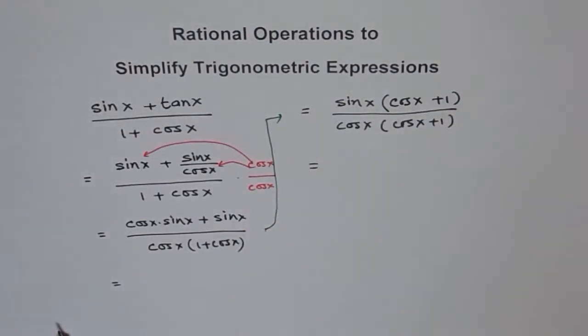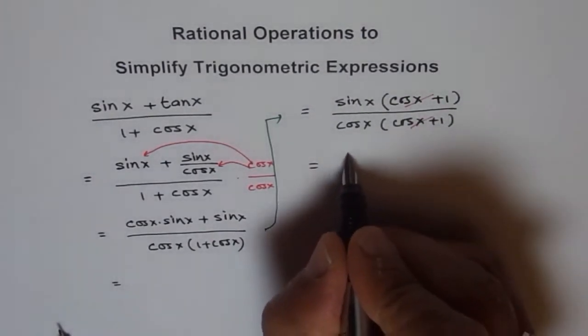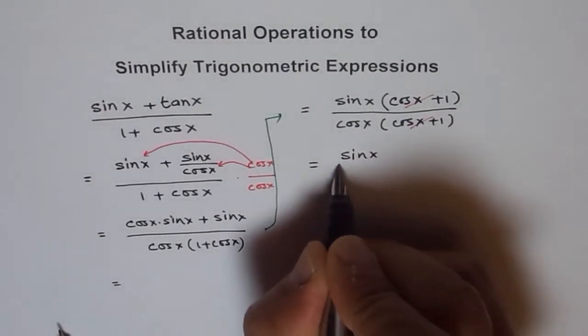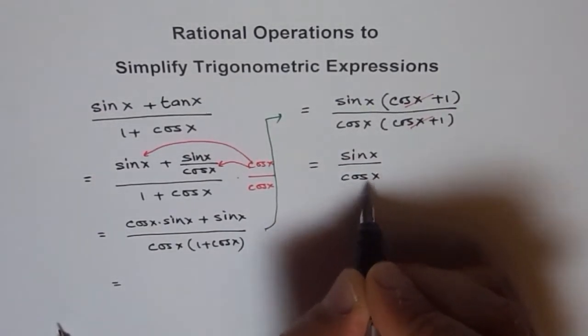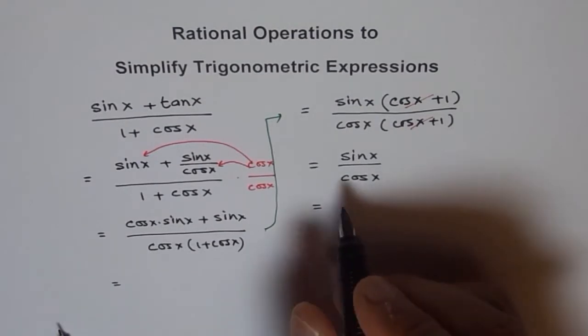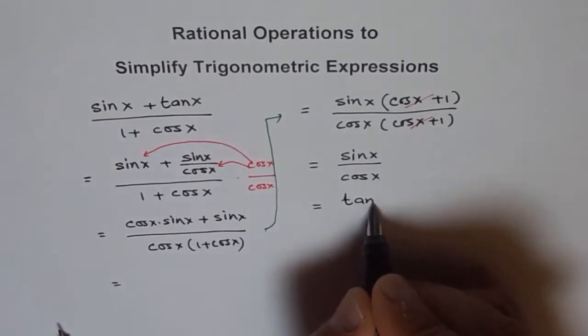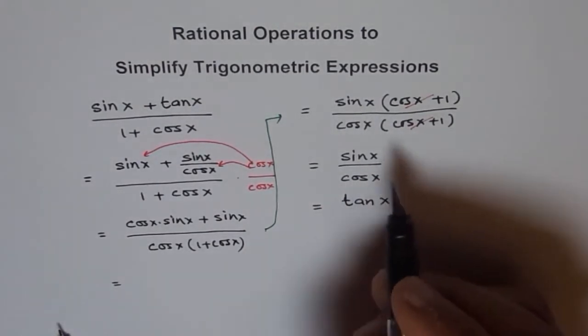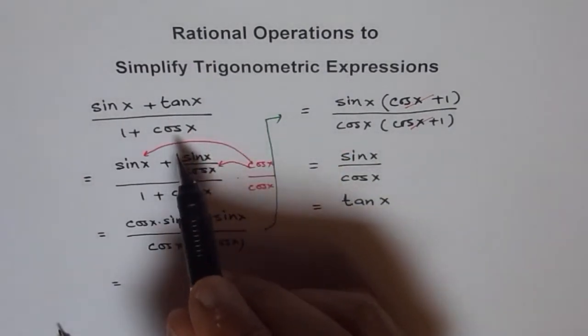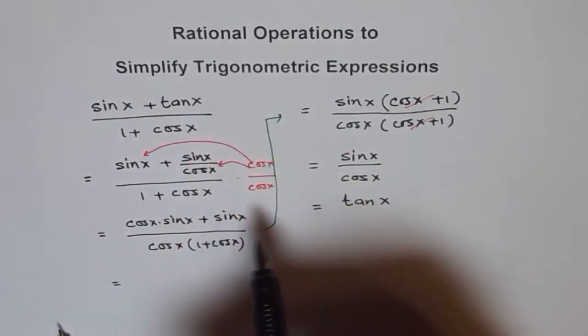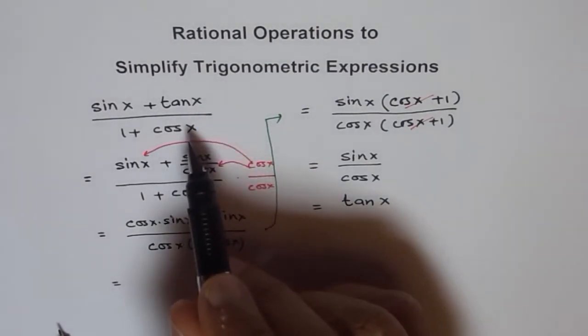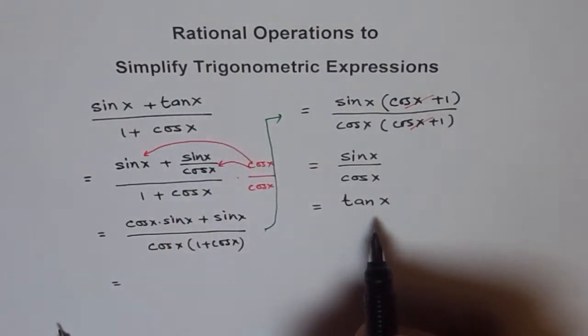Now you can cancel the factor cos x plus 1 which is common, and we get sin x over cos x. You know sin x over cos x is basically tan x. So we started with this rational expression, seemingly complicated, and it turned out to be just tan x.